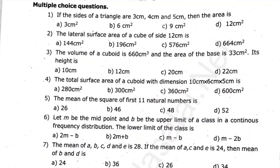The mean of the square of first 11 natural numbers. 6. Let m be the midpoint and b be the upper limit of a class in a continuous frequency distribution. The lower limit of a class is dash.